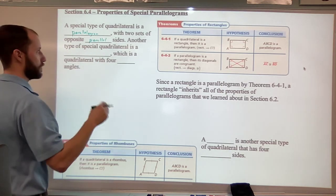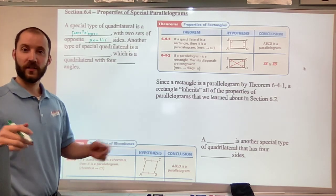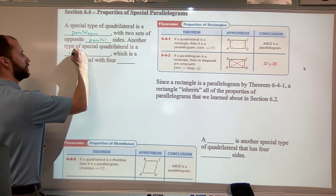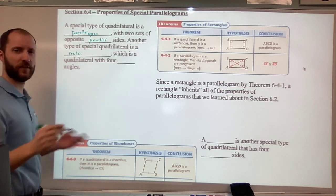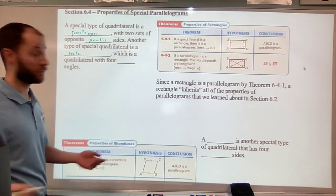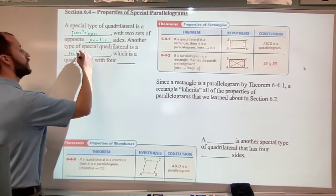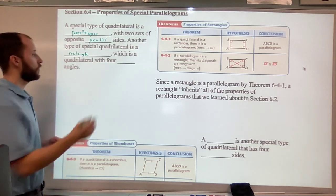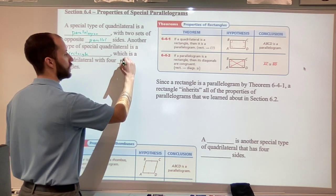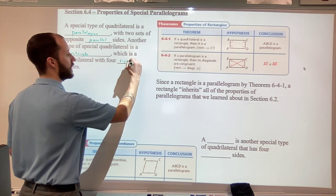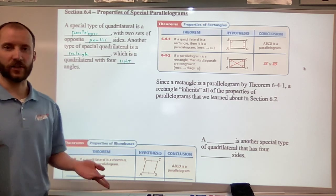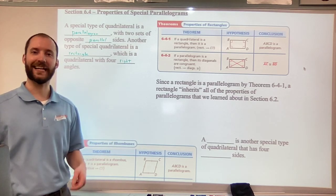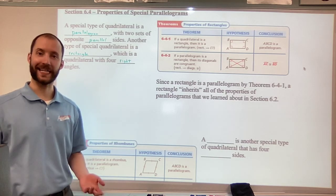So another special type of quadrilateral that we're going to look at first is a rectangle, which I'm sure you've heard of before. And if you haven't heard of it, I'm sorry, but now you will. So a rectangle is a quadrilateral with four right angles. In the quadrilateral, it has four sides, four angles, but what makes it special is that all of those angles are right angles.